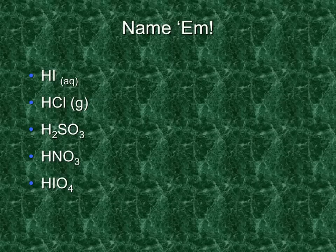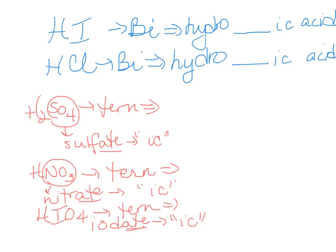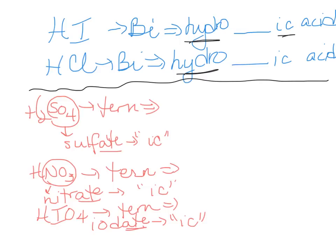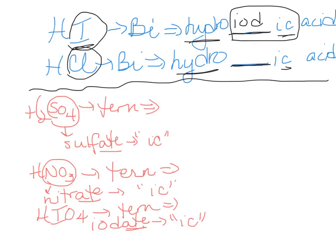Now your turn — pause and try these yourself before checking the answers. The first two are binary acids, so start with 'hydro' and end with '-ic'. The root for iodine is 'iod', giving hydroiodic acid. Similarly, the root of chlorine is 'chlor', giving hydrochloric acid.